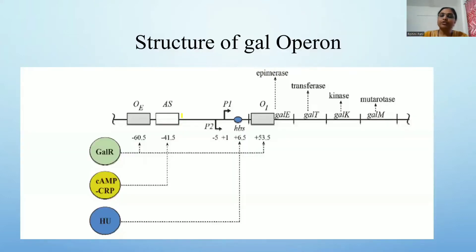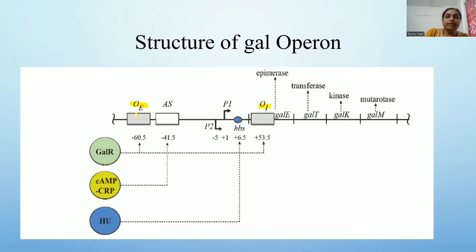Looking at the structure of the galactose operon: there are two operators, OE and OI. OE is upstream of the promoter, while OI is located within the structural gene — it is downstream of the promoter and present inside the structural gene.